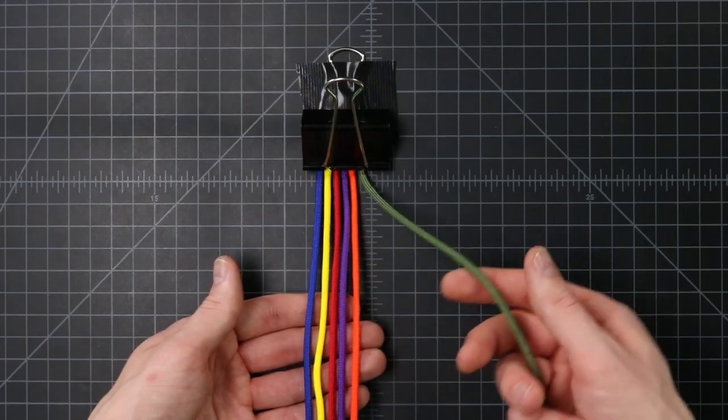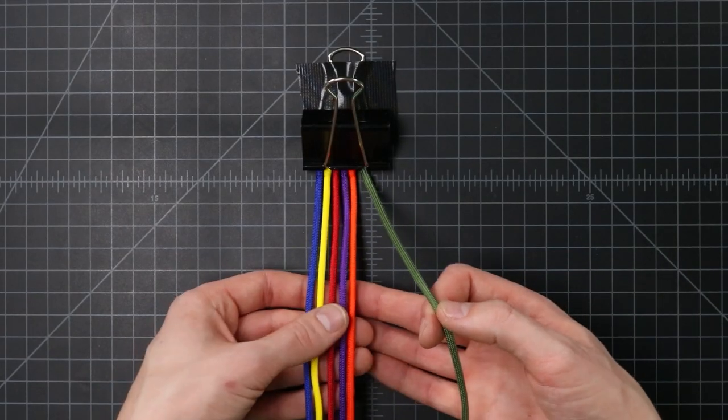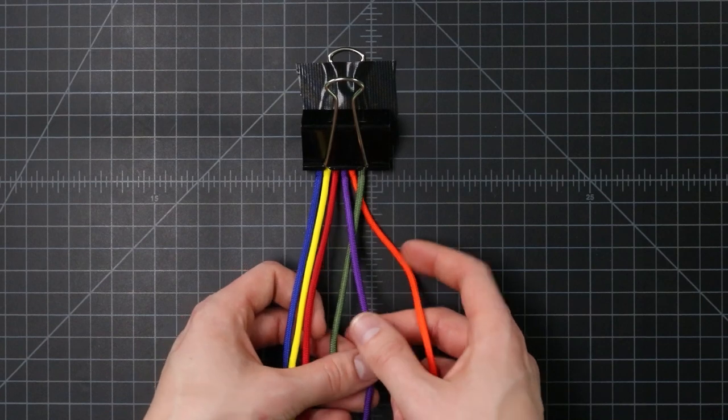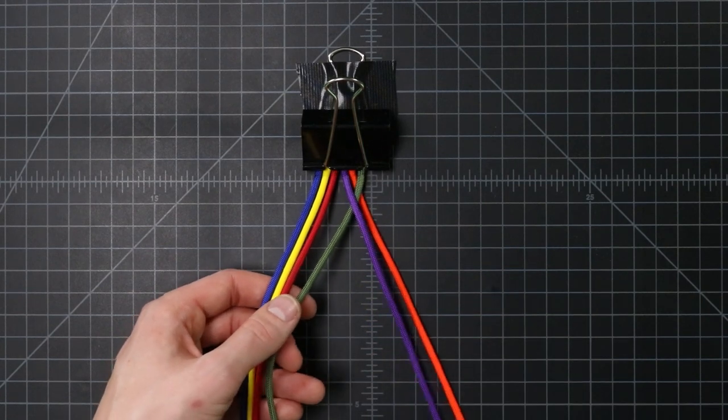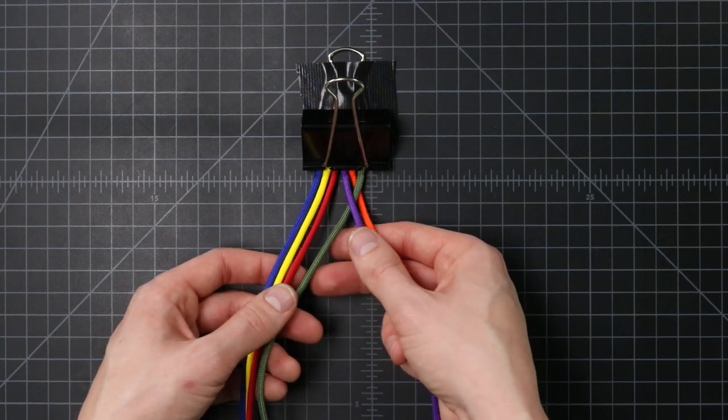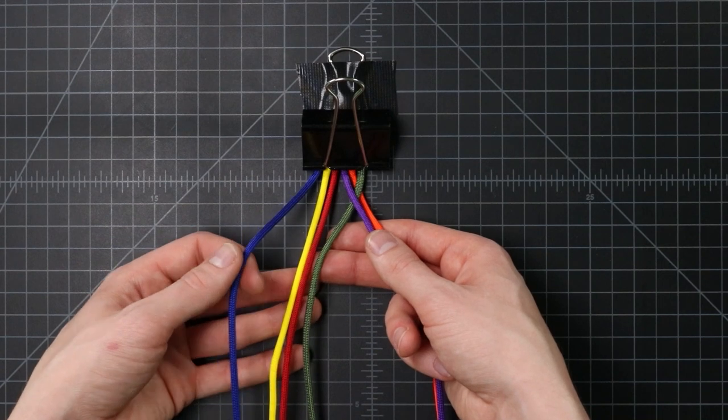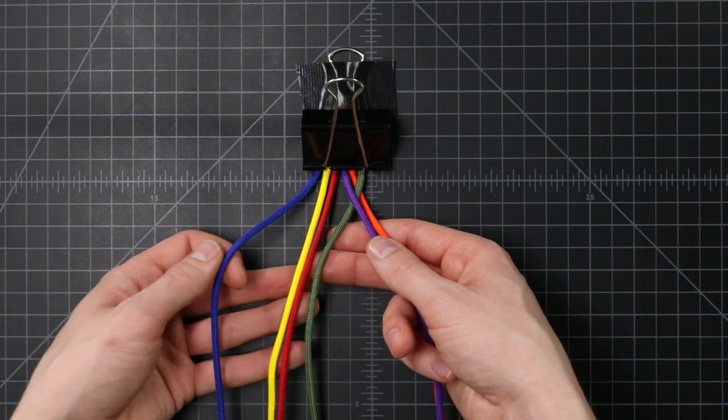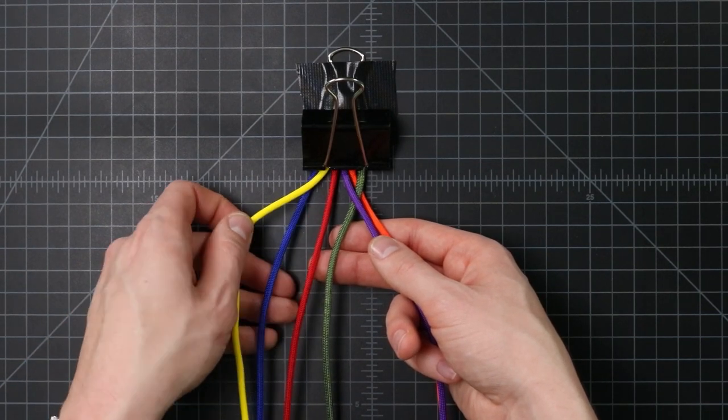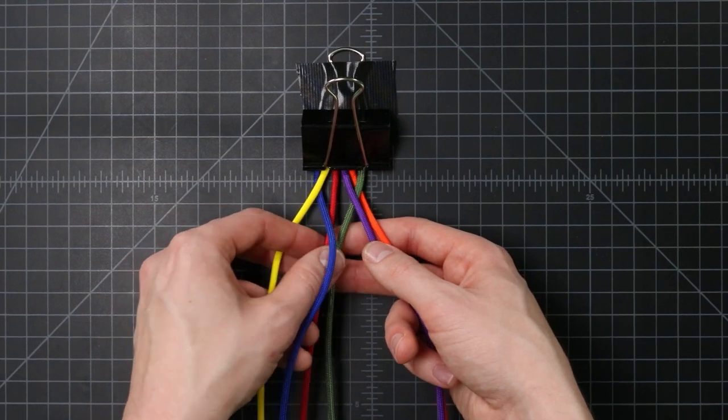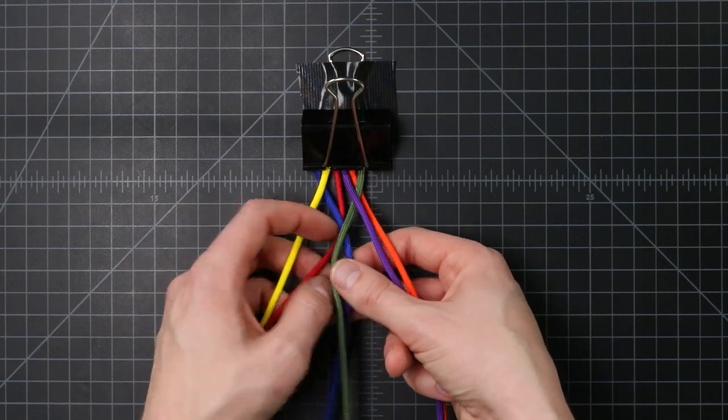So just like before, we're going to take the outside cord, bring it over the first cord, underneath the second, and then on the other side, because we're back to an even number, we've got to go underneath that first cord, over the second, underneath the third.